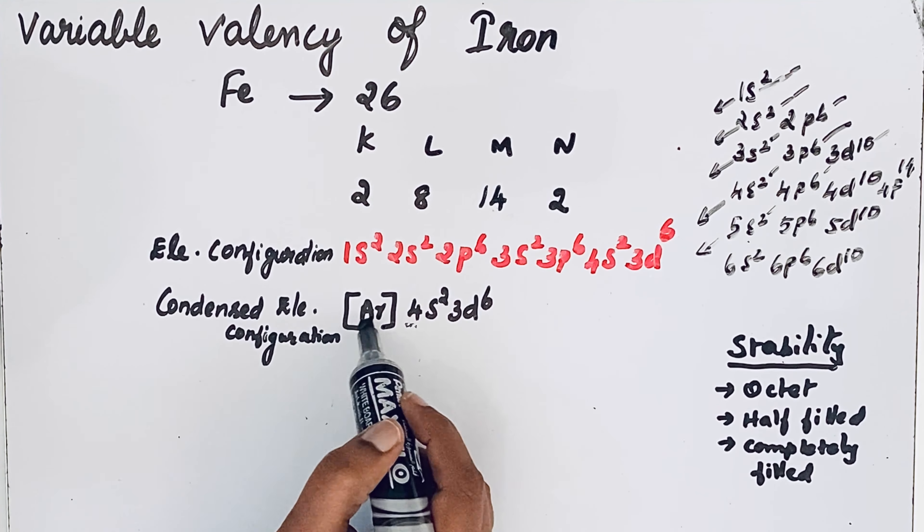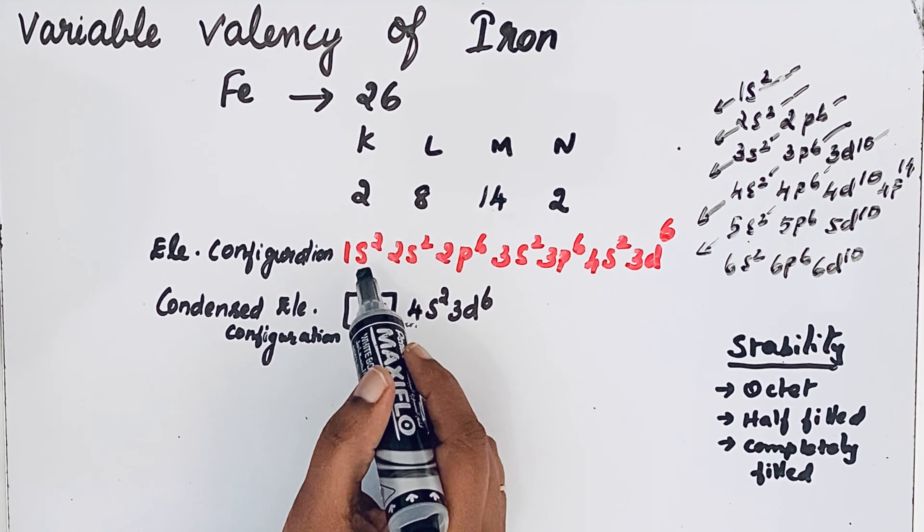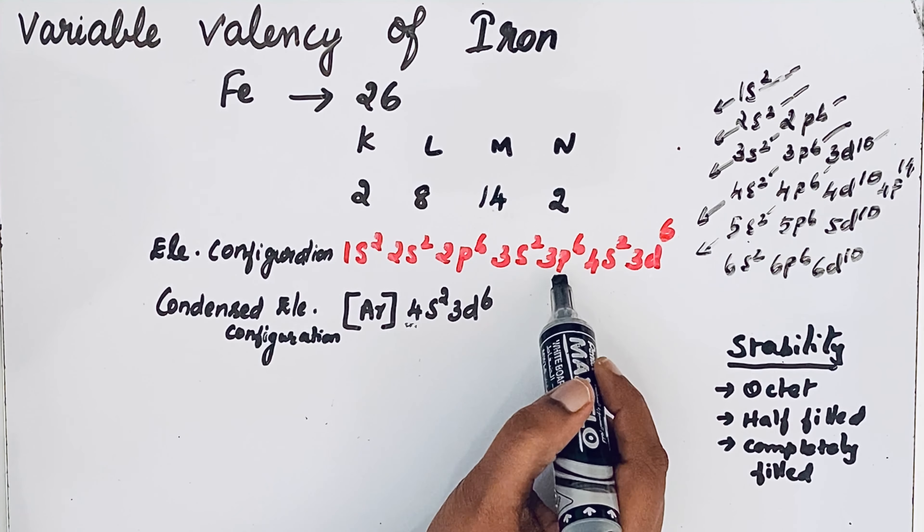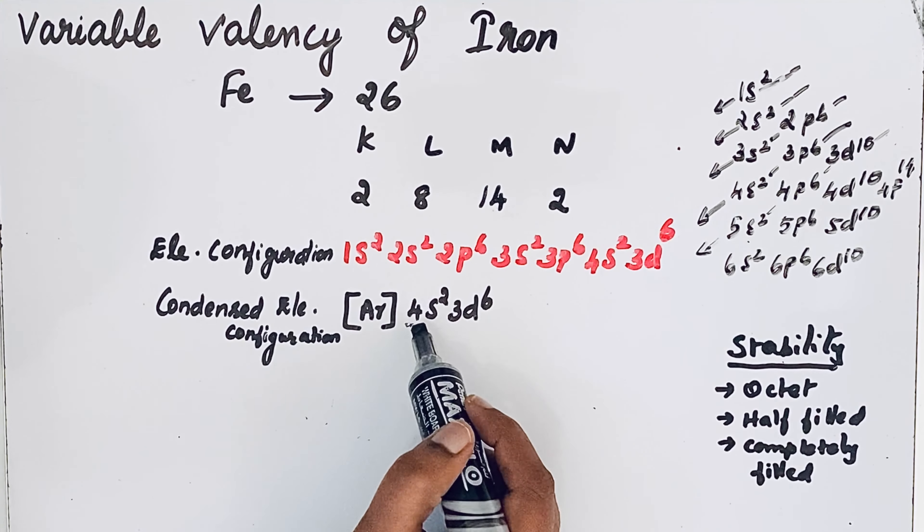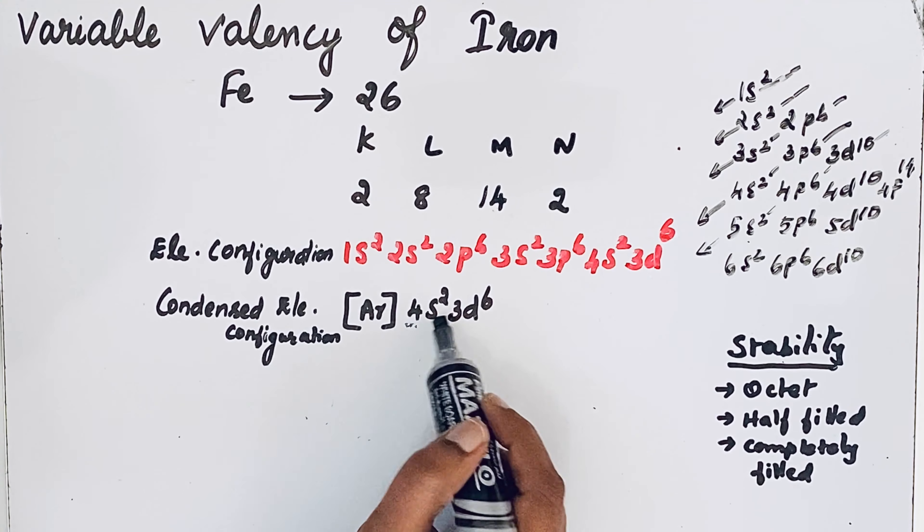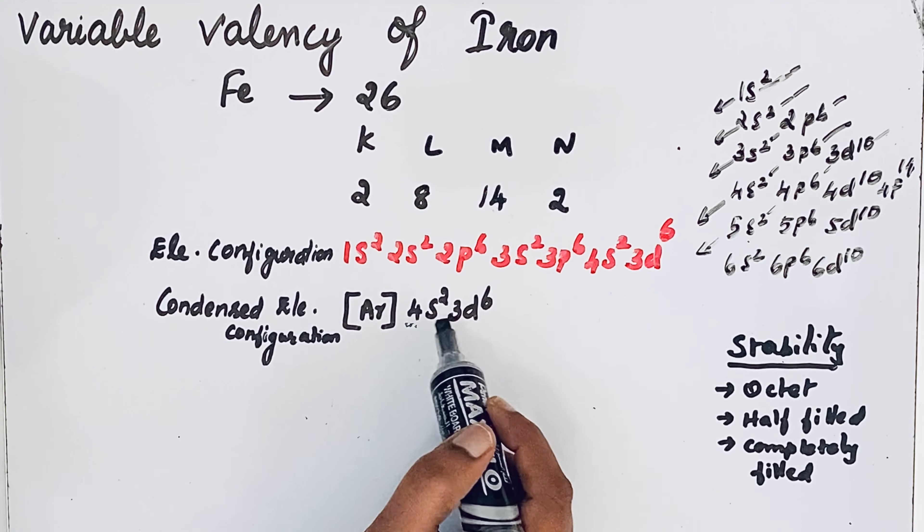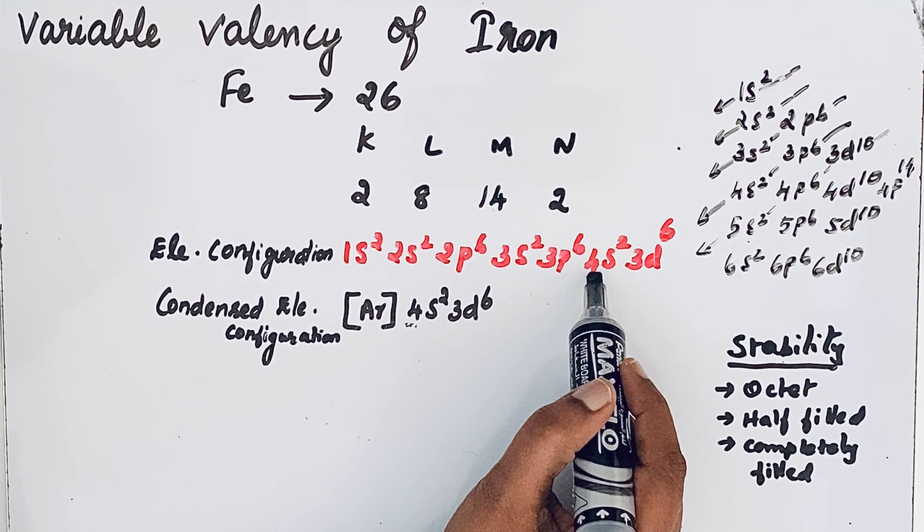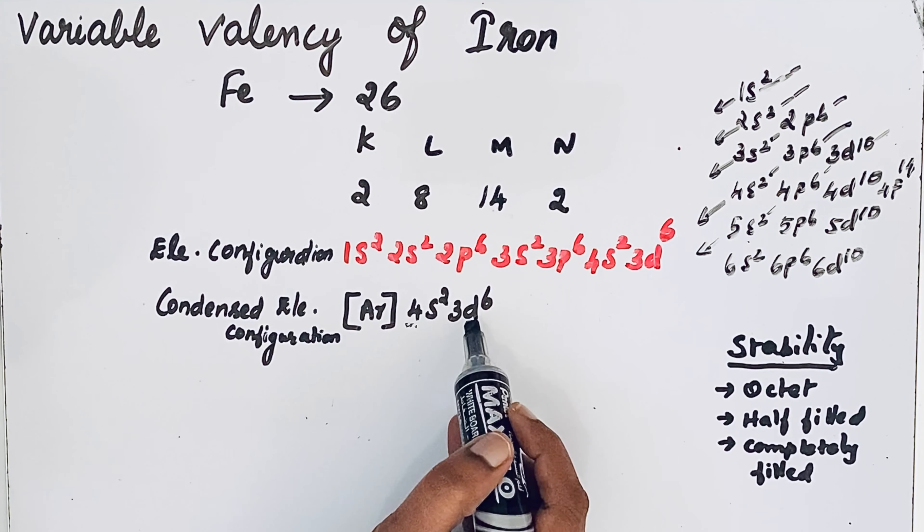The electrons present inside the bracket are called core electrons. The electrons present outside this bracket are called valence electrons. So 4s2 and 3d6 are valence electrons.